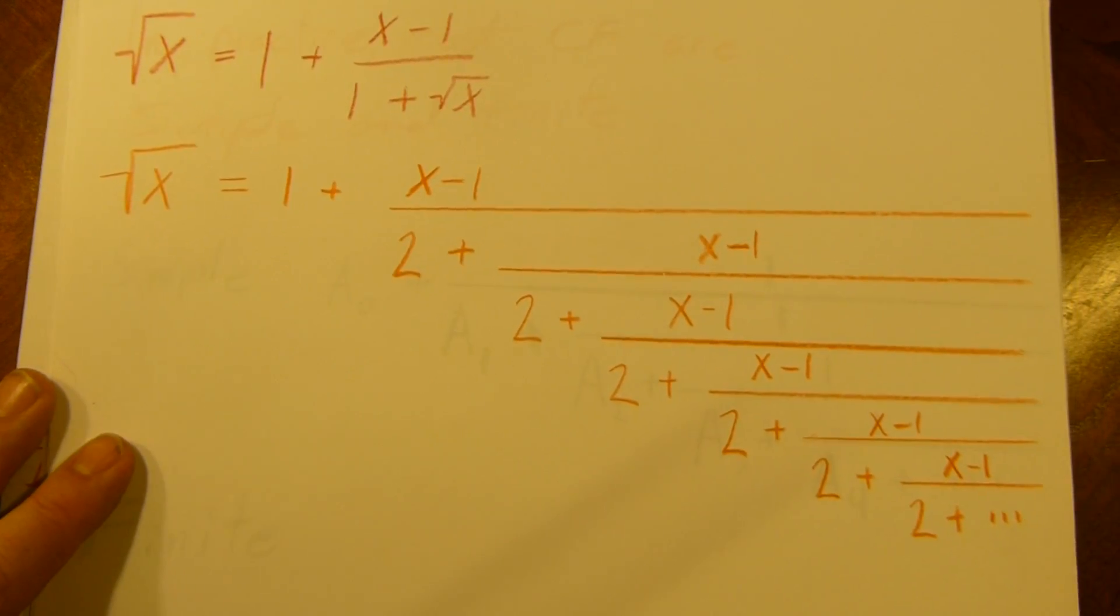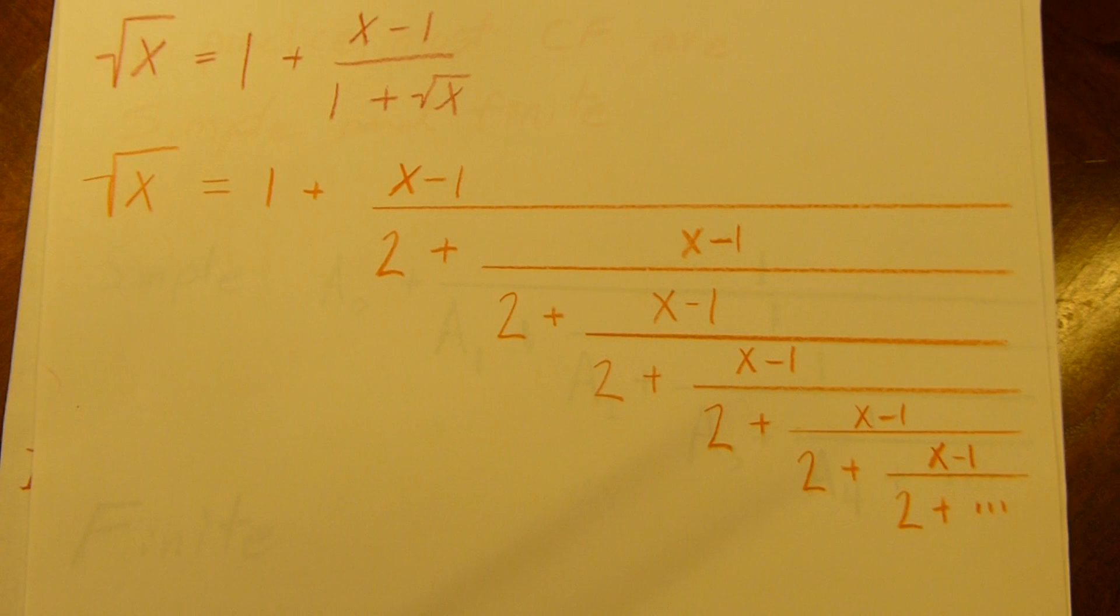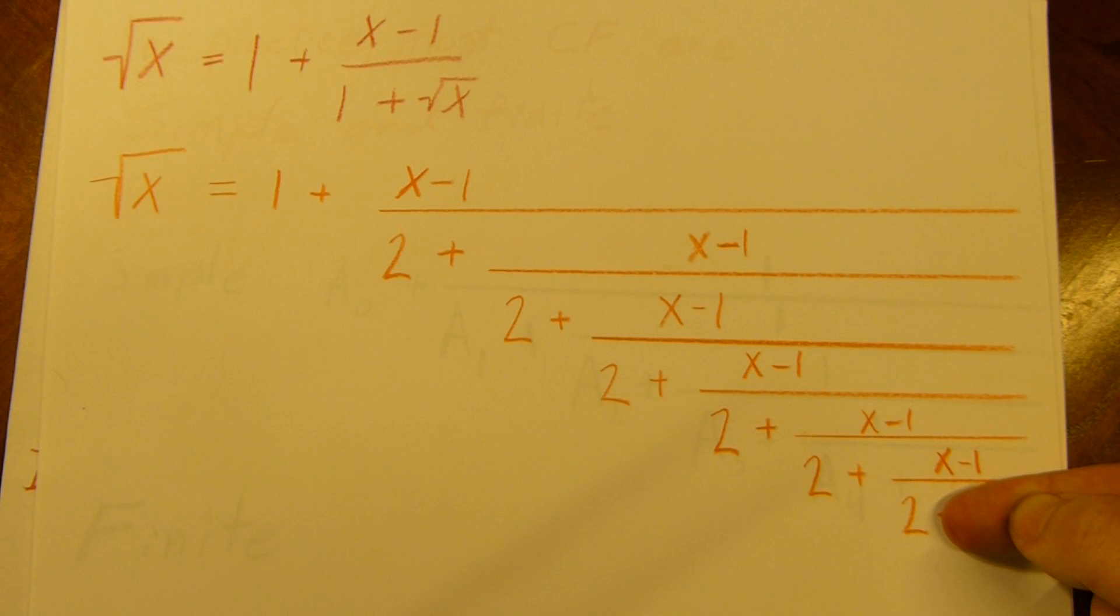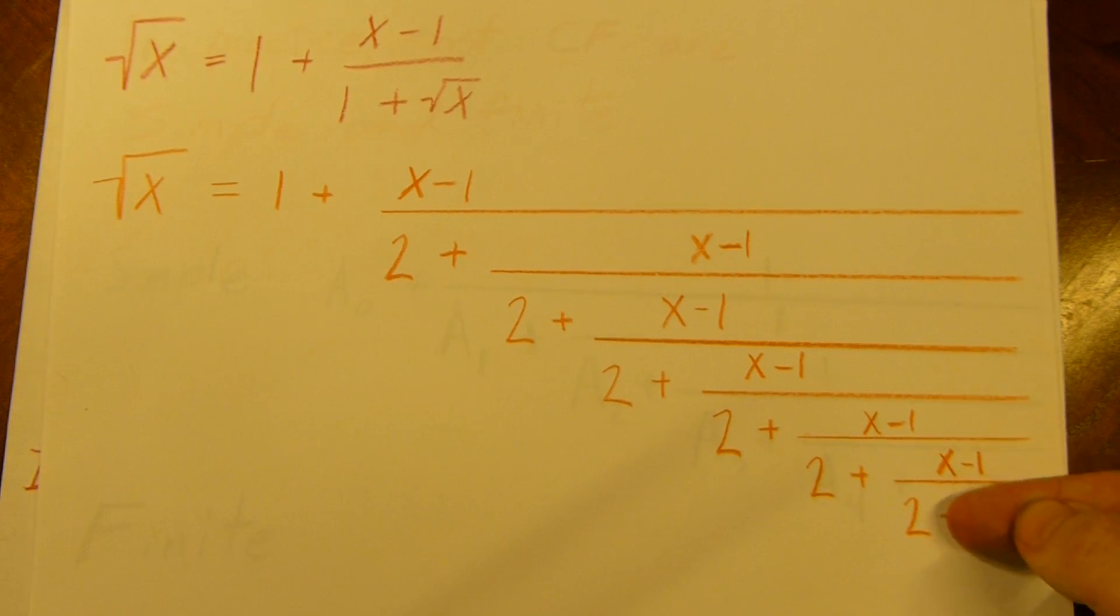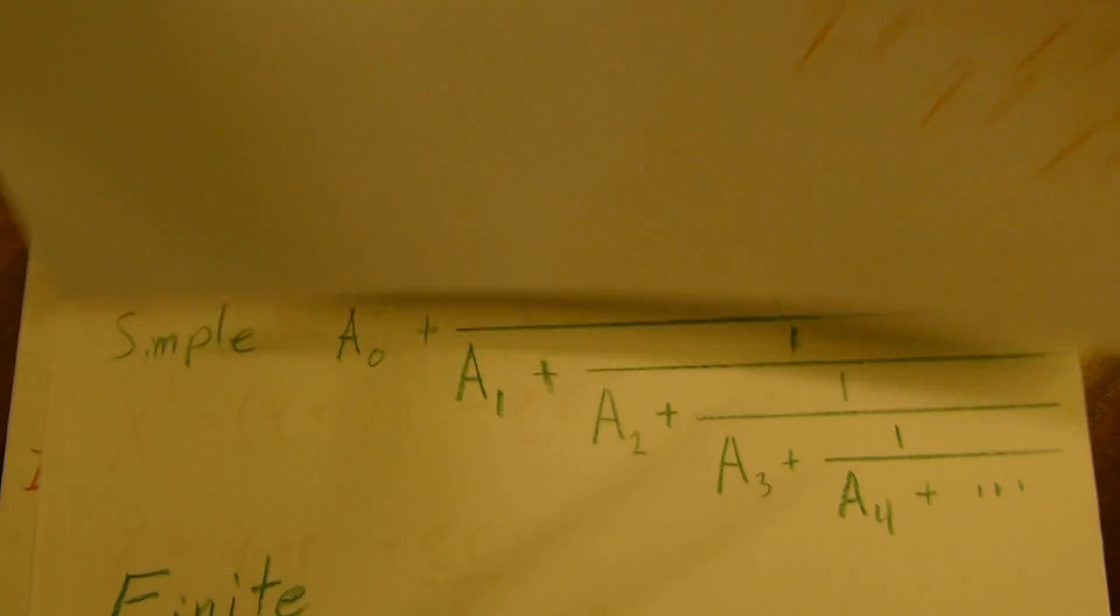Now of course, in practice we can't go on forever. We have to plug it into a computer or a calculator or just start scribbling numbers on paper at some point. So we truncate it. We just cut it off there and say, okay, start calculating. We just forget about this part right here. We just start calculating and it works. It will converge to the square root. It makes it a very useful property.